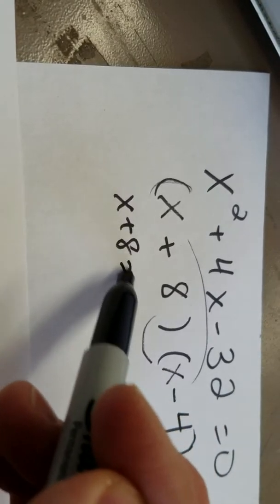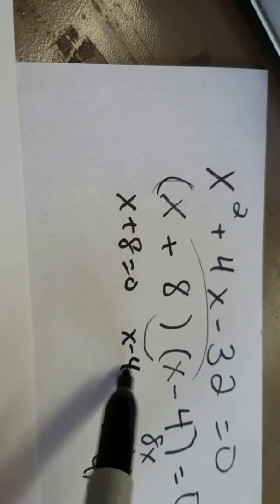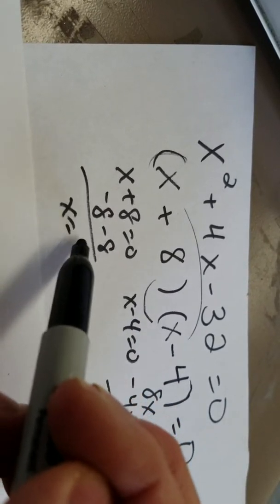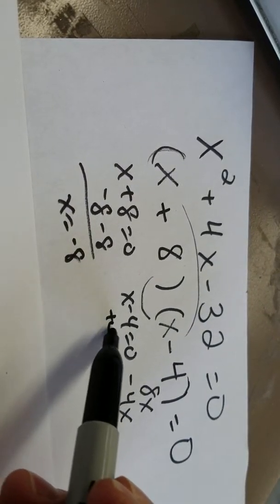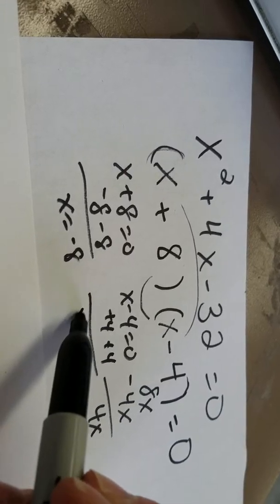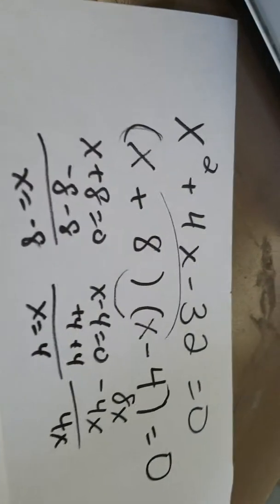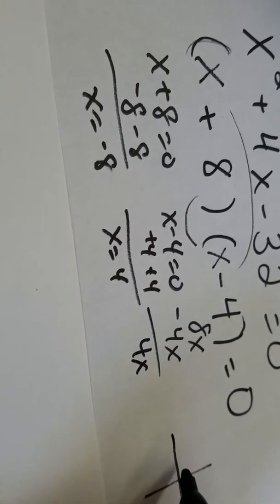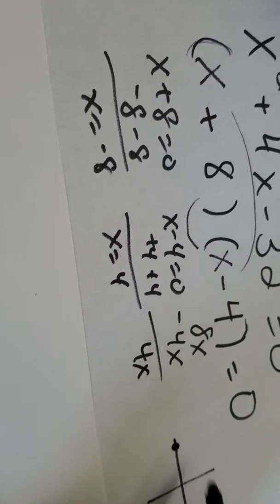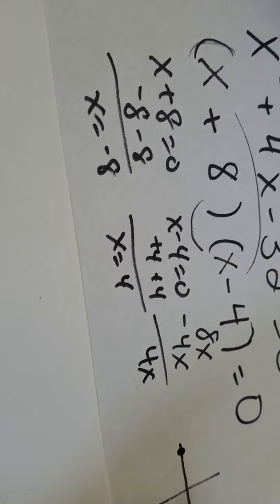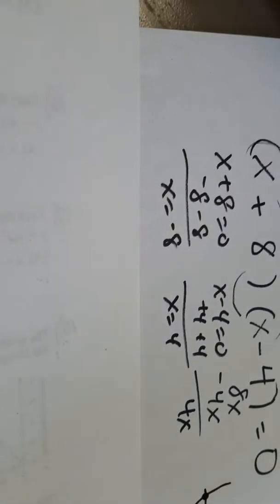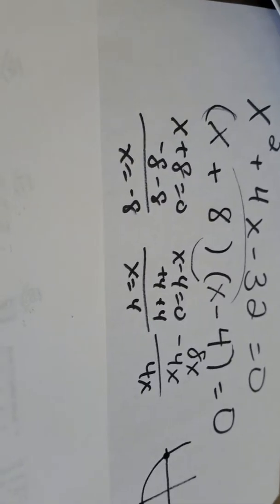So factoring this is easy. x plus 8 equals 0, x minus 4 equals 0. Therefore, x equals negative 8. I'll add 4 to both sides here, and x equals 4. Those are going to be my two roots, my two zeros, because it's where the x zeroes out. At negative 8 and 4, we don't know the vertex yet, but it's going to loop something like that. Pretty easy.